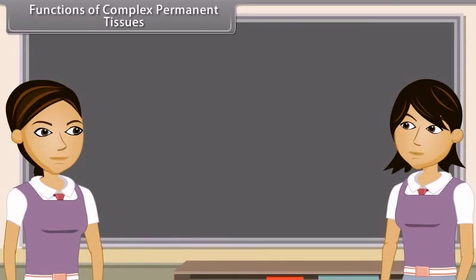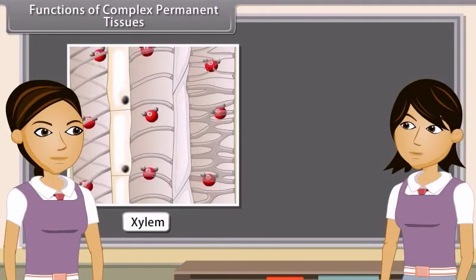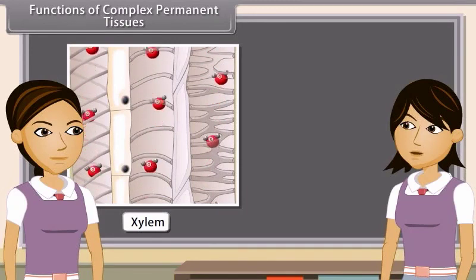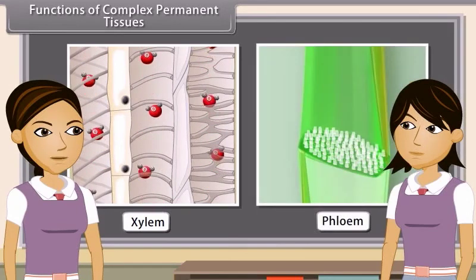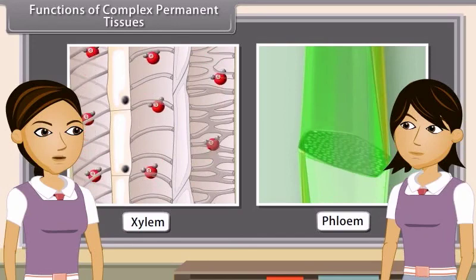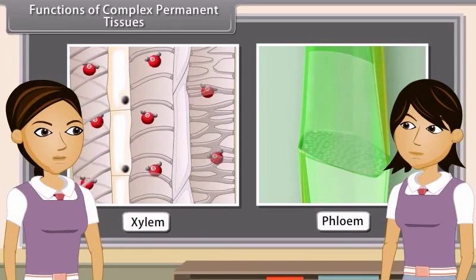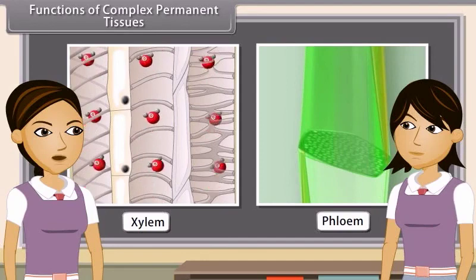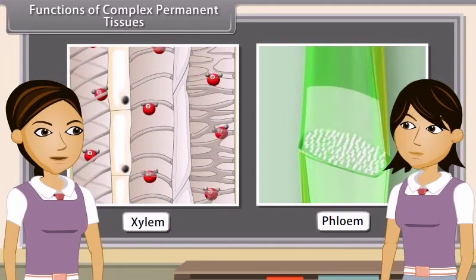The main function of xylem is to carry water and mineral salts upwards from root to different parts of shoots. Phloem transports photosynthetically prepared food materials from the leaves to storage organs and later from storage organs to the growing regions of the plant body.